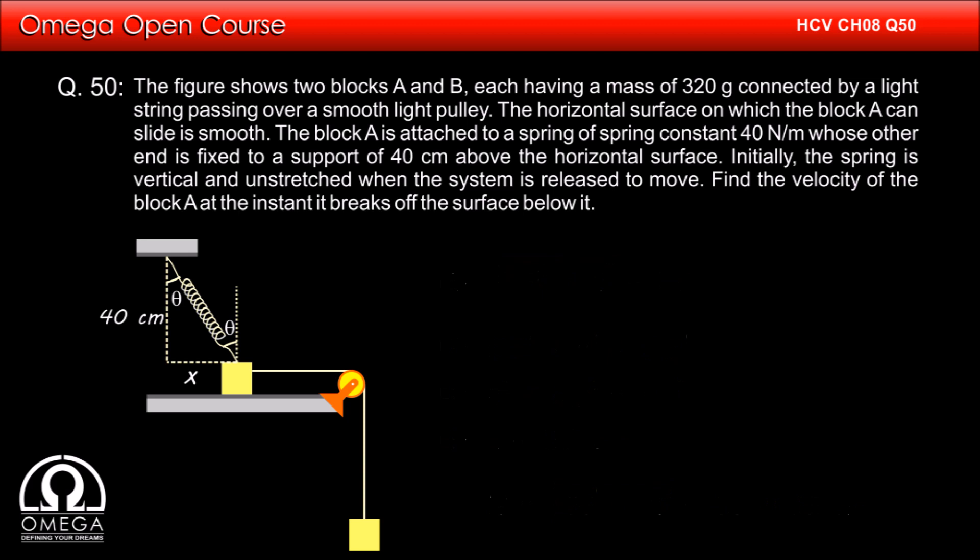Since block B is connected directly to block A, the block B descends by x. Thus, the work done by gravity is mgx. Of this energy, the spring stores half K delta L square as potential energy. The remaining energy is in the kinetic energy of the blocks that is half into 2m into V square.